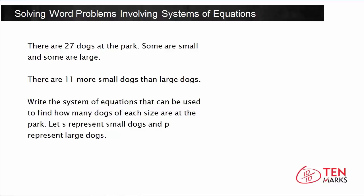Let's begin by gathering some information. We know that there are 27 dogs in all, and this is a mix of small and large dogs. We know that s is going to represent small dogs and p is going to represent large dogs. We can begin by writing the first equation: if there are 27 dogs in total, that means s plus p equals 27.